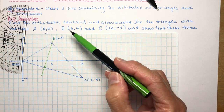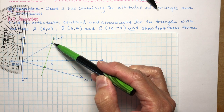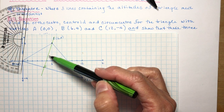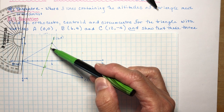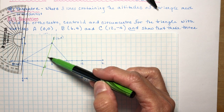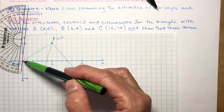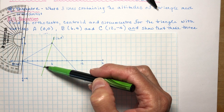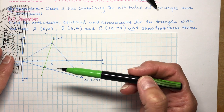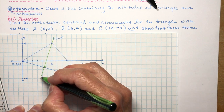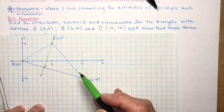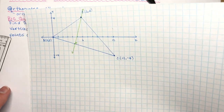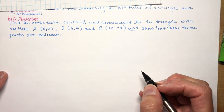We did another lesson where we found the distance from a point to a line, and the shortest distance is perpendicular to that line. The difference here is that we're finding the equation of the altitude line, not just the length. When finding the height of a triangle, you needed the intersection point to calculate the length. But here we just need the equation, and for that we need slope and a point.